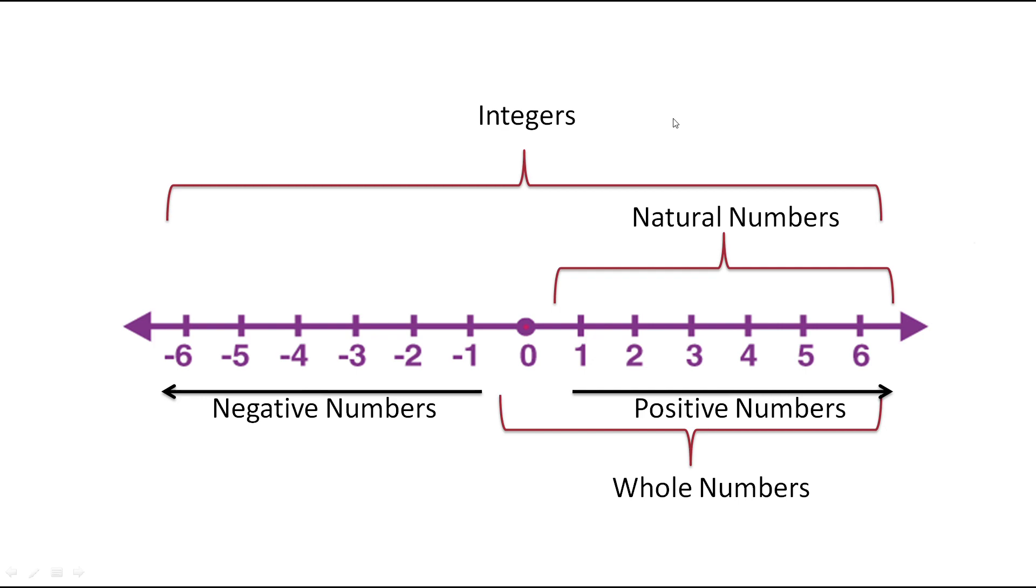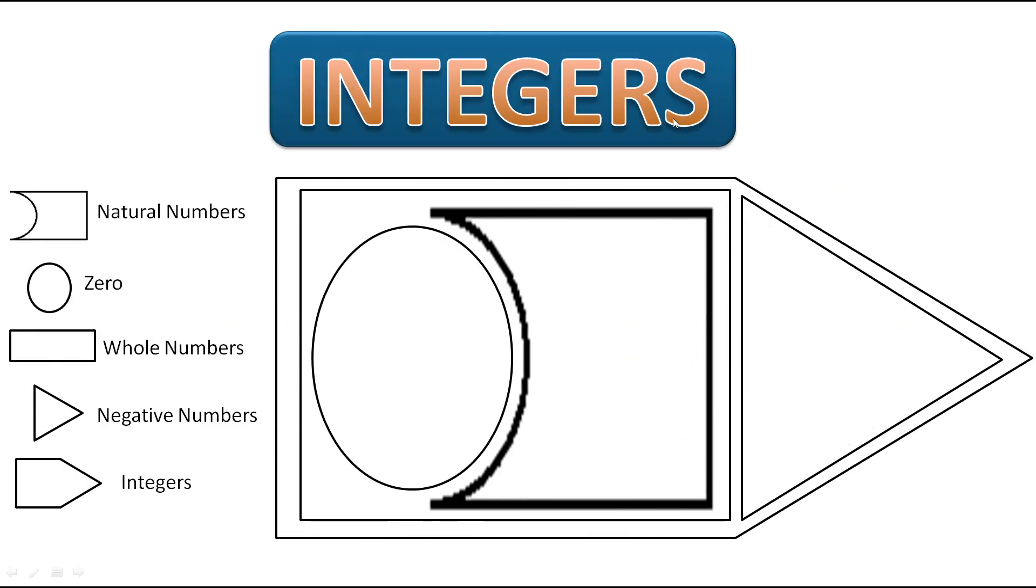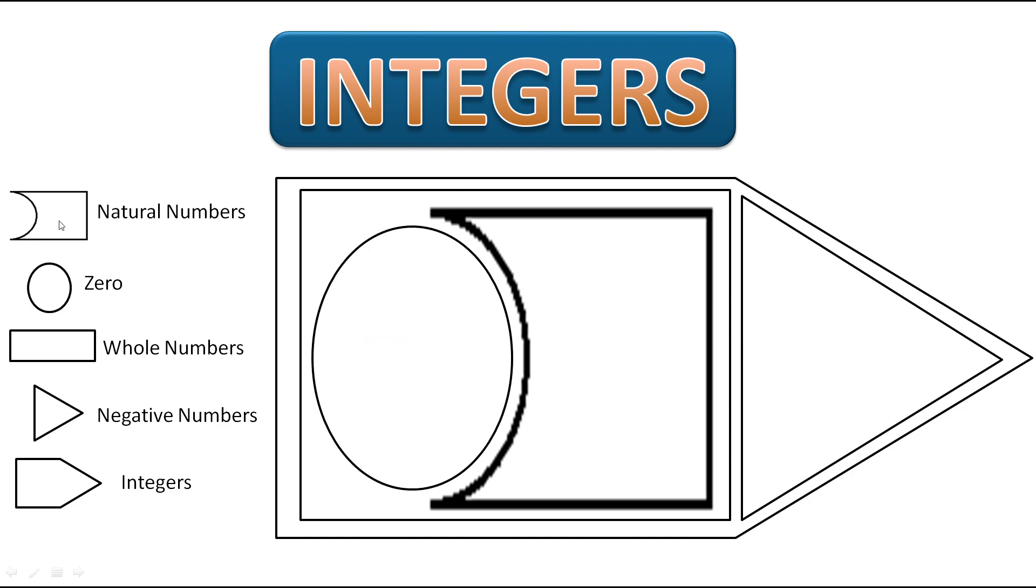Now in your textbook, they have explained it this way. See, this part of the diagram is called natural numbers.